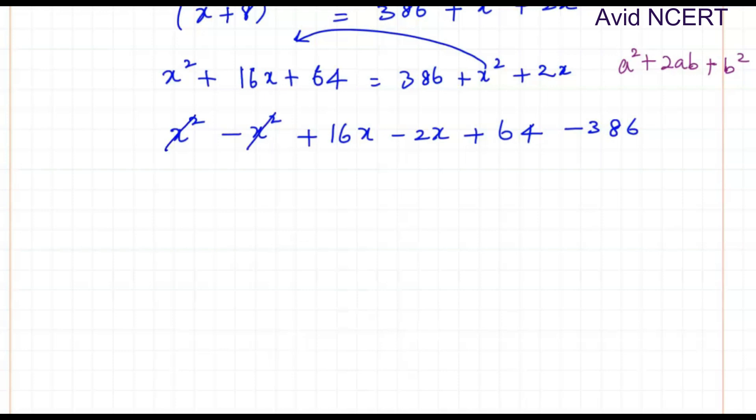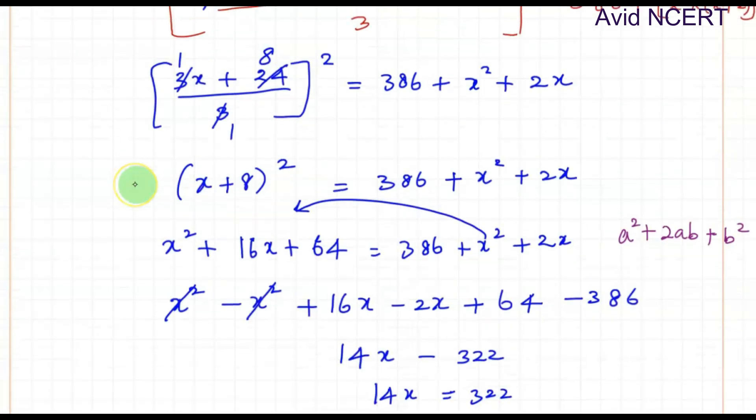So x squared, x squared gets cancelled. 16 minus 2 is 14x. Minus 386 minus 64 is minus 322, so 14x equals 322. So x equals 322 divided by 14, which equals 23.